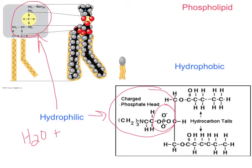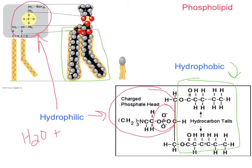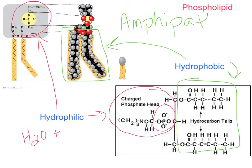The phosphate head is attracted to the water. There are also hydrophobic portions of the phospholipid — those would be the hydrocarbon tails, made up of mostly carbon and hydrogen bonds, so they have no charge. They are hydrophobic, meaning water-fearing. That makes our molecule what is called amphipathic — amphipathic molecules have both hydrophilic and hydrophobic portions.